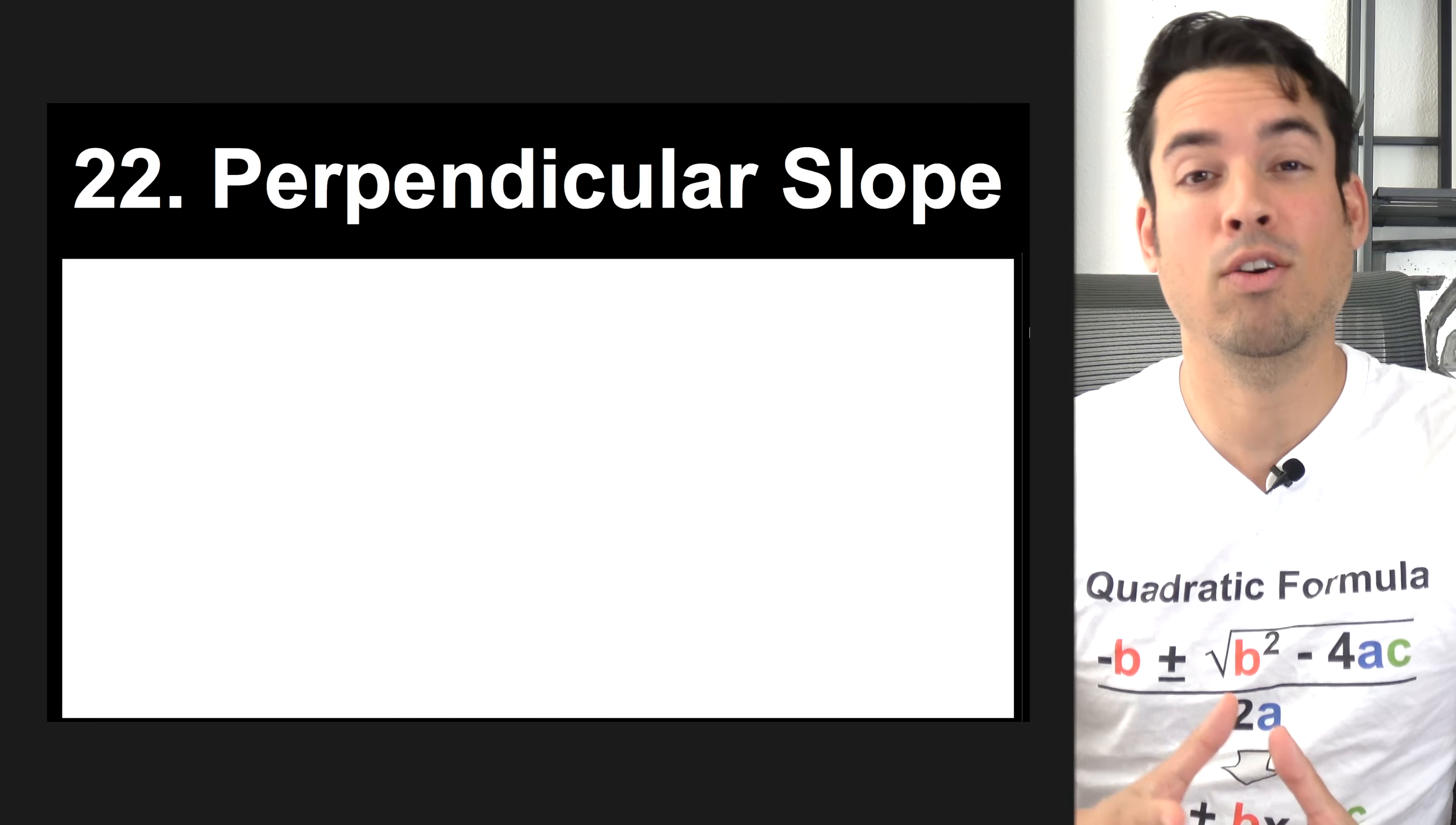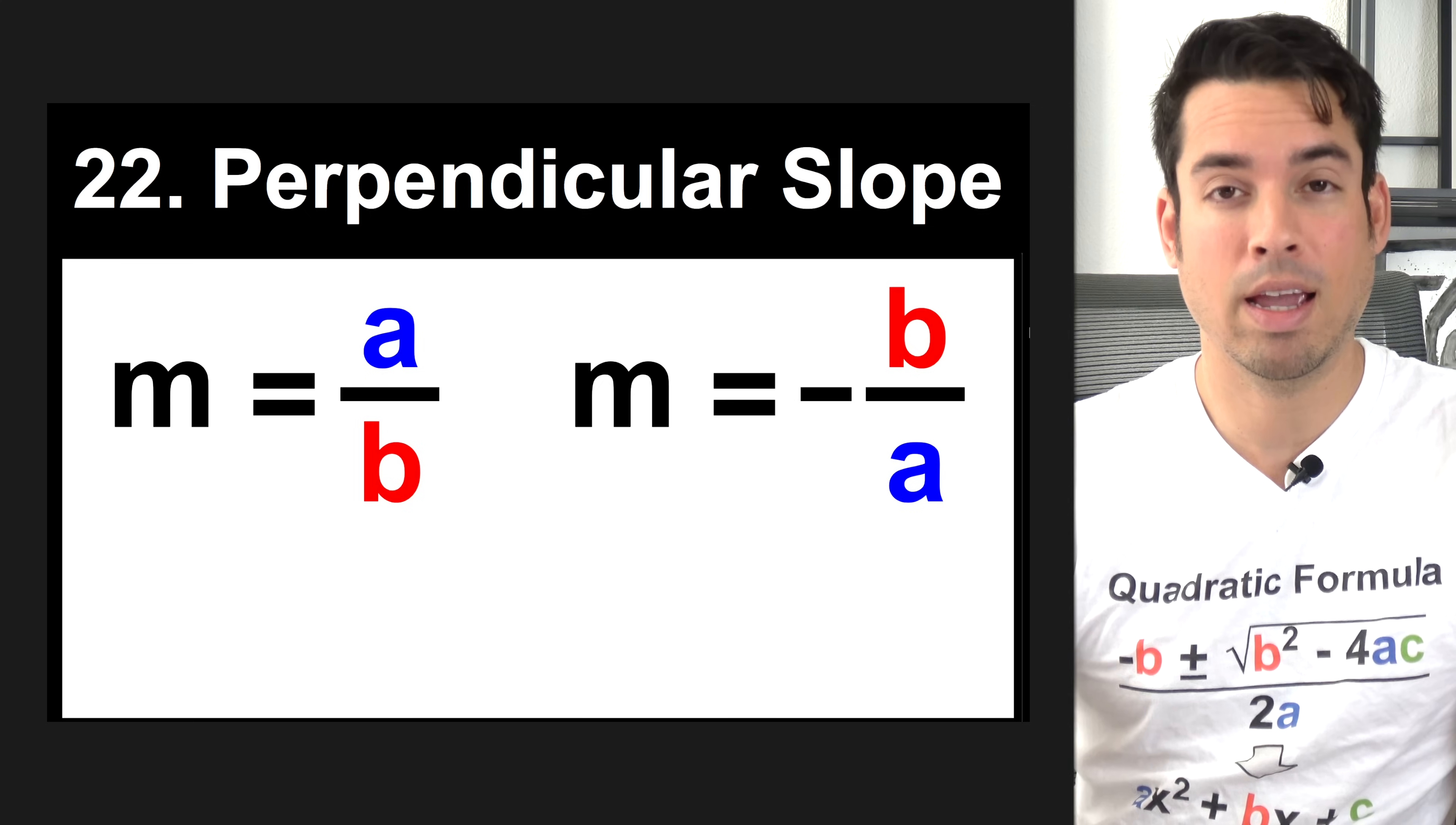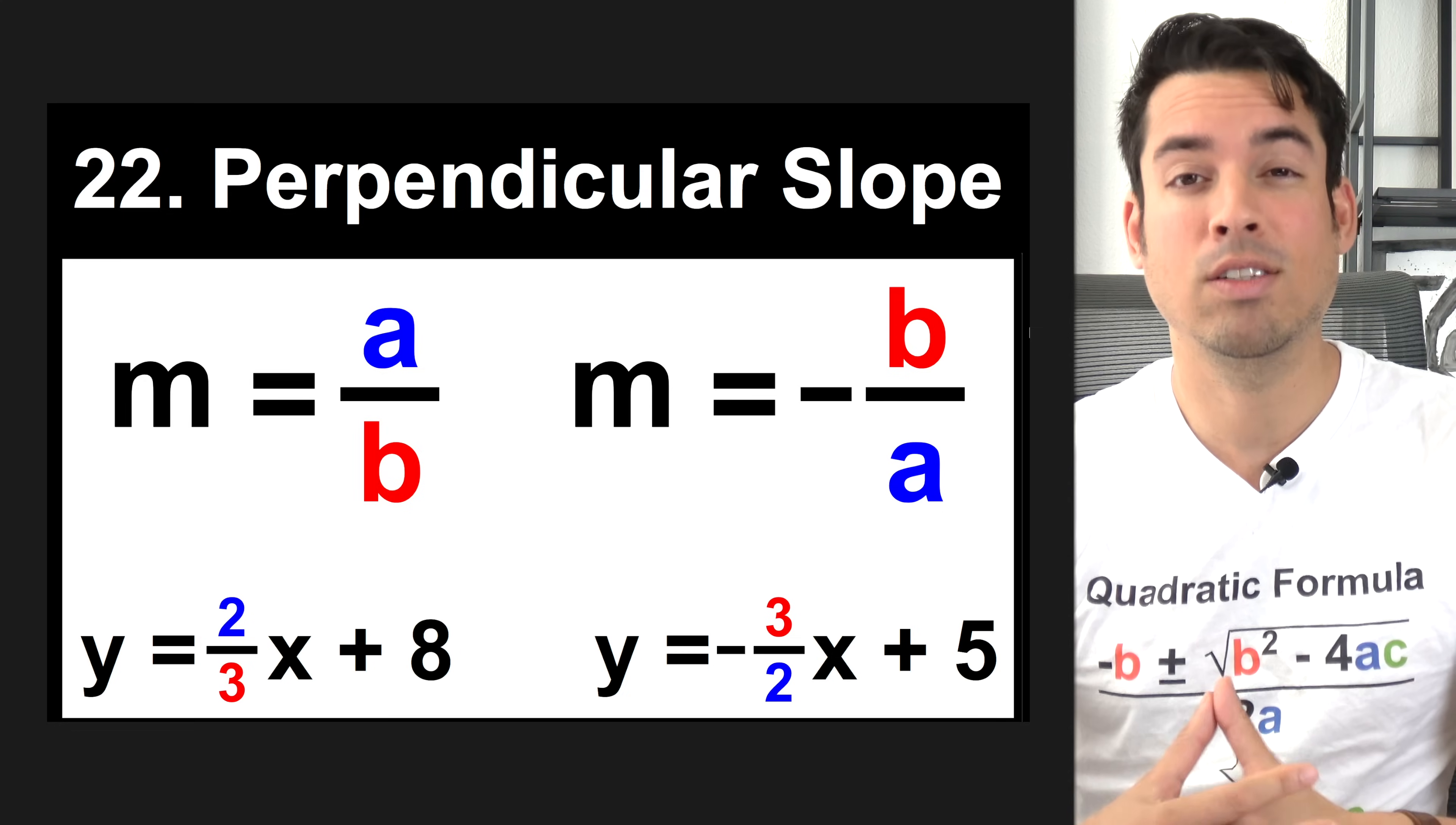Next is the formula to calculate perpendicular slope. It's not really a complicated formula, but it's something that you need to know. For example, if we have a line with a slope of A over B, the perpendicular slope would be the negative reciprocal, which would be negative B over A. For example, we have a line here that has a slope of 2 thirds. The perpendicular slope would be negative 3 over 2. Just FYI, the y-intercepts are irrelevant to whether or not the lines are perpendicular.